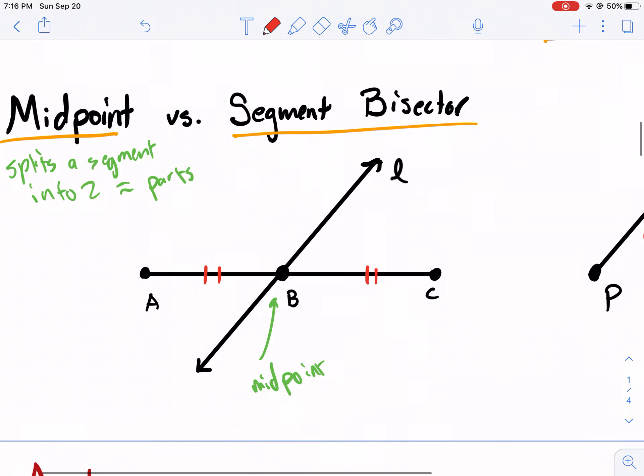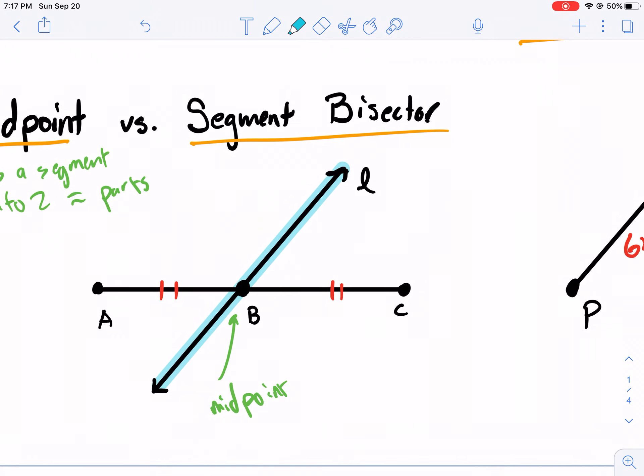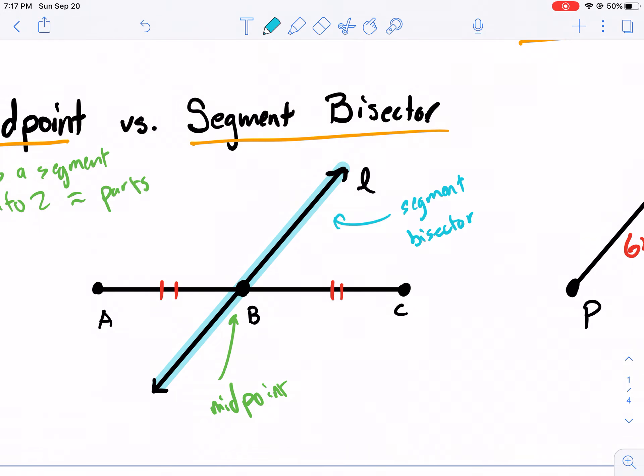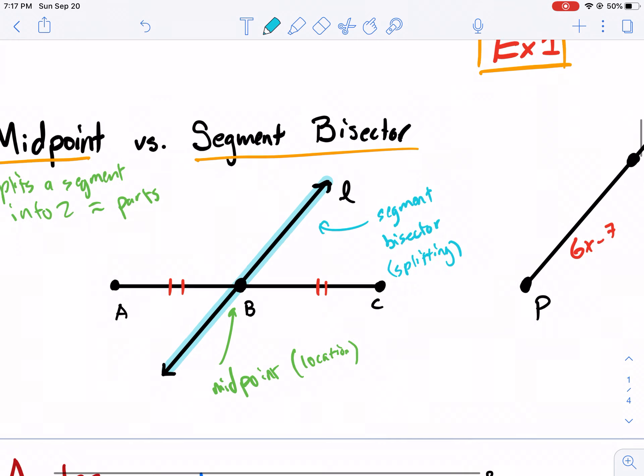Now segment bisector, what does that mean? Well, segment is a line segment, and bisector - bi means two, sector means split. So split in two. Segment bisector is the line that's doing the splitting, bisecting a segment. So this is the segment bisector. It's the one doing the splitting. So midpoint is the location. Think of this as the location. And then think of the segment bisector as the guy doing the splitting.